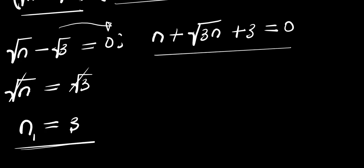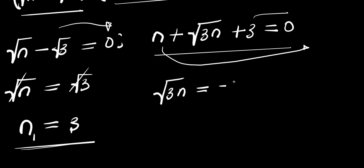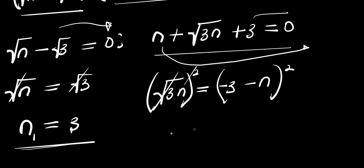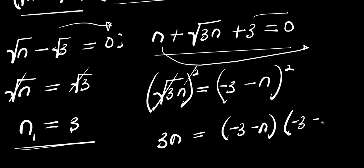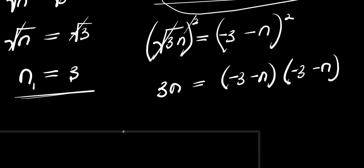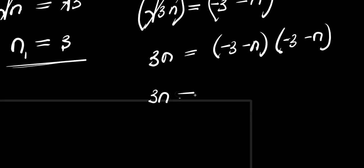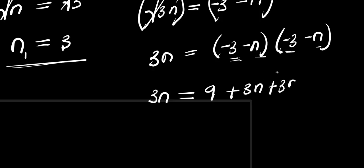Now let's solve the second factor. We move terms around: root 3n equals negative 3 minus n. To eliminate the square root, I square both sides, giving 3n equals negative 3 minus n times negative 3 minus n. Expanding: 3n equals 9 plus 3n plus 3n plus n squared.